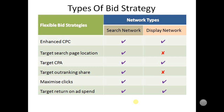But if we are talking about Target Search Page Location by CPC, it will only help us on the Search Network — it will not help us on the Display Network. If we are talking about Target CPA, it will help us on both networks: Search Network as well as Display Network. But Target Outranking Share will only help us on the Search Network; it will not help us on the Display Network.